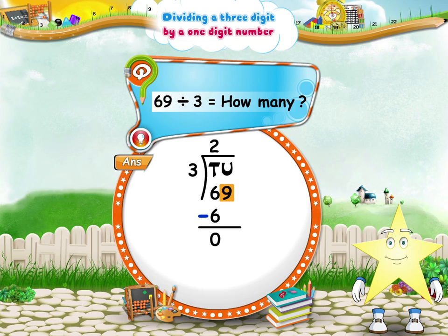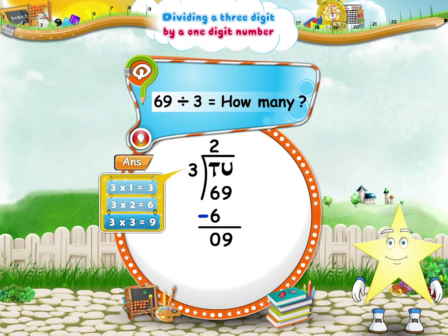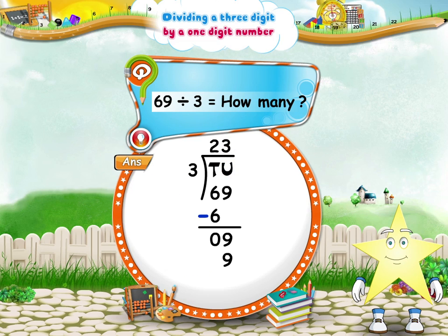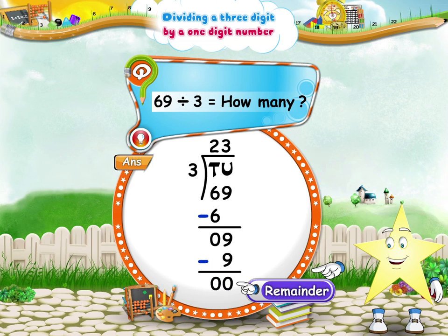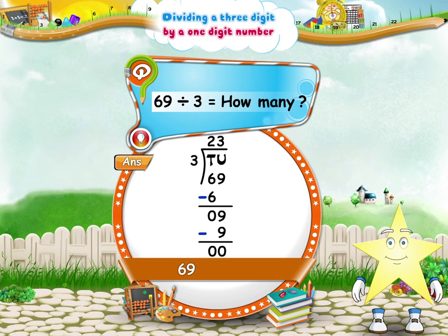Next, bring down the nine units and write it at the side of zero. Divide the nine units by three. Say the three times table up to nine. Three threes are nine. The quotient is three. Write the three above the line in the units place of the quotient. Subtract the product of three and three from the nine units. The remainder is zero. The quotient is 23. So, 69 divided by three is 23.